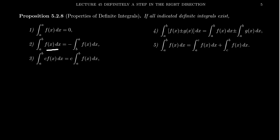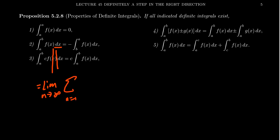Here's another property — this one's kind of interesting, and we actually use it all the time. If you take the integral from a to b of f(x) dx, this is equal to negative the integral from b to a of f(x) dx. So if you take the limits a and b and swap them around, you get negative the original integral. Why is that? Remember where the integral comes from: the integral is the limit as n goes to infinity of the Riemann sum from 1 to n of f(x_i) delta x.